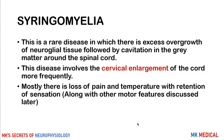Talking about syringomyelia: this is a rare disease involving excessive overgrowth of neuroglial tissue — the supporting cells of the nervous system — followed by cavities forming in the gray matter around the spinal cord. This disease most frequently involves the cervical enlargement of the cord, and mostly there is loss of pain as well as loss of temperature with retention of other sensations, along with motor functions to be discussed later.